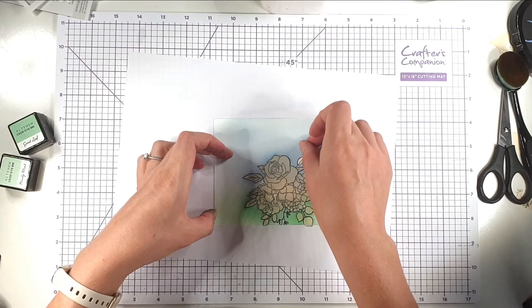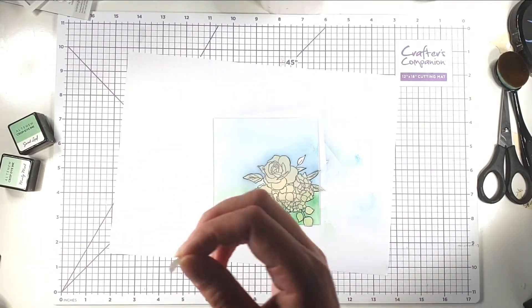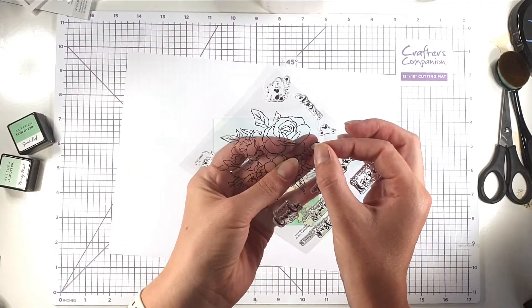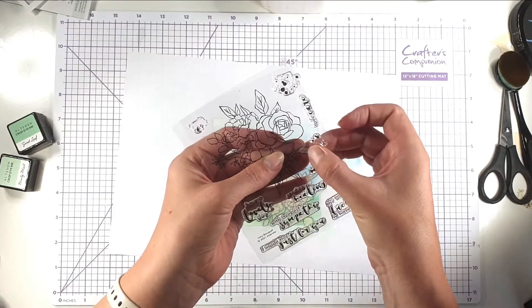I'm just going to take off my mask, and then as I take off the bits off my mask I'm just going to pop them onto the packaging for my stamp.